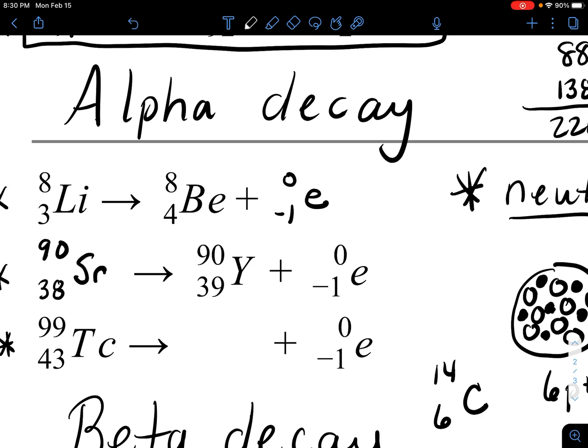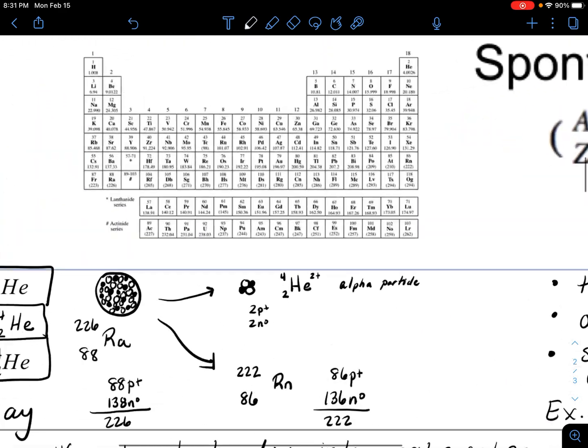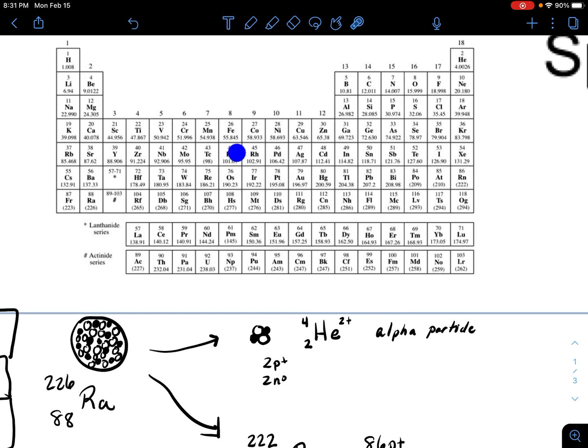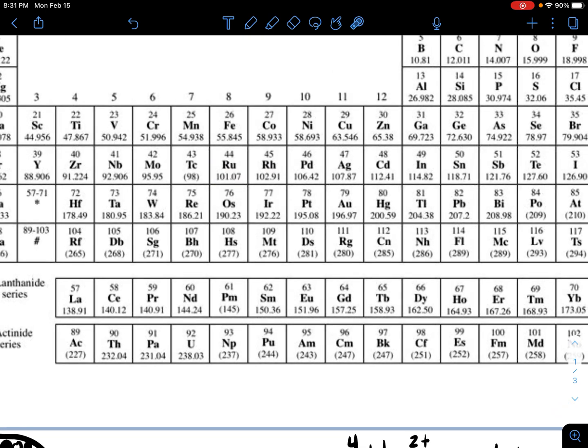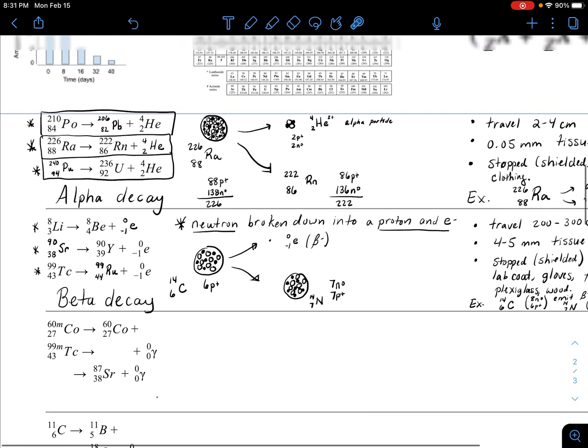Let's do one more. What about technetium? It could go through beta decay, so the proton count would go up by one and the mass number would stay the same because we sacrificed a neutron but made a proton. We need to look up element 44. It's ruthenium. If you take 99 plus 0, you get 99, and 44 plus negative 1 gives you 43.